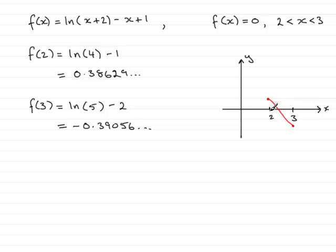That means that we've got a root between 2 and 3 now because there's been a change of sign. That root would be that value there, that would be our root.